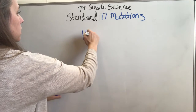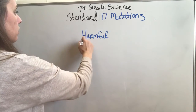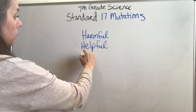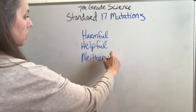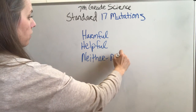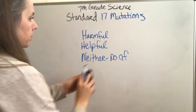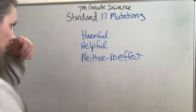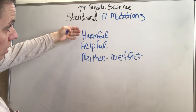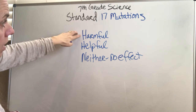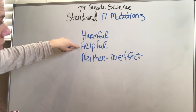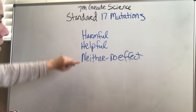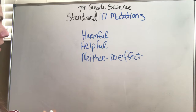These mutations can be harmful, helpful, or neither — meaning no effect. If they're harmful, that means we're not going to have species survival. If they're helpful, it means it helps species survival and reproductive success. And if it's neither, it's not going to affect that at all.